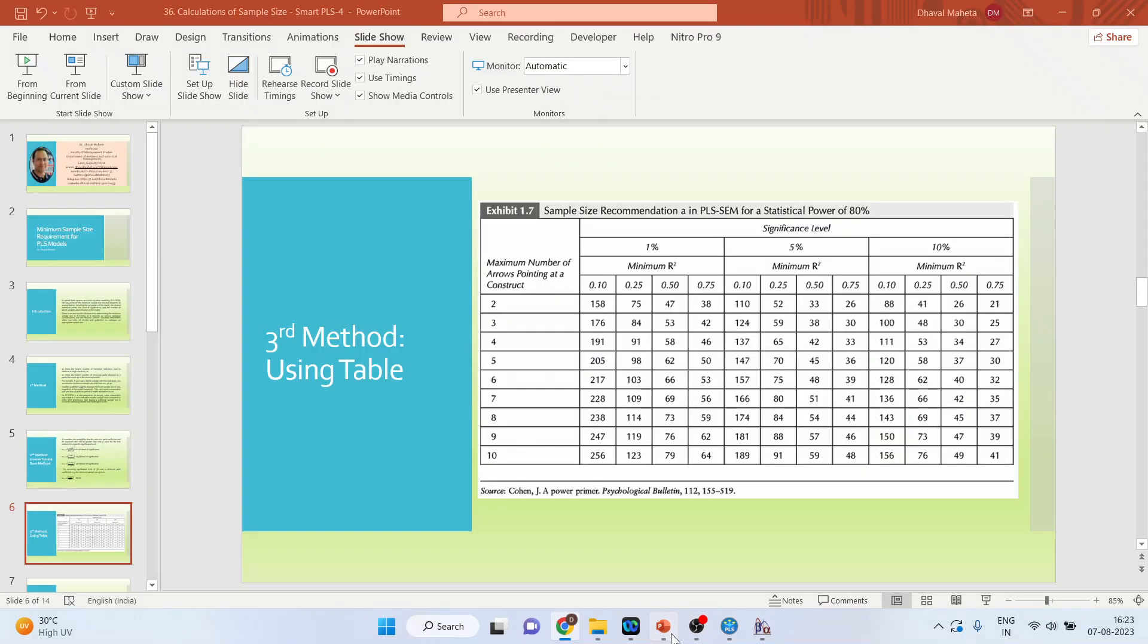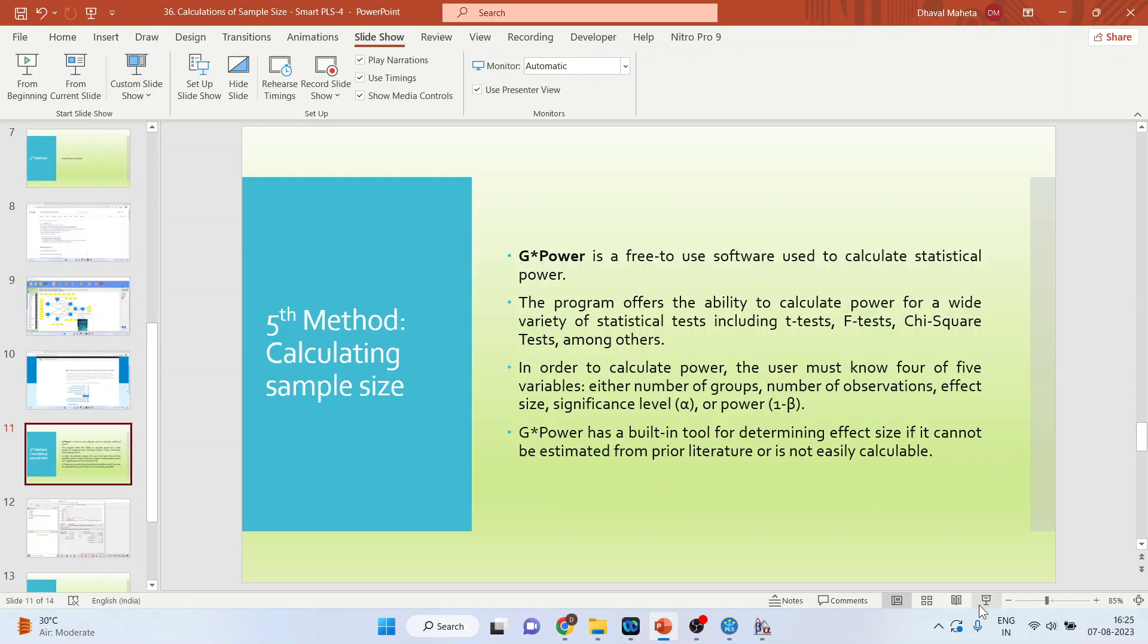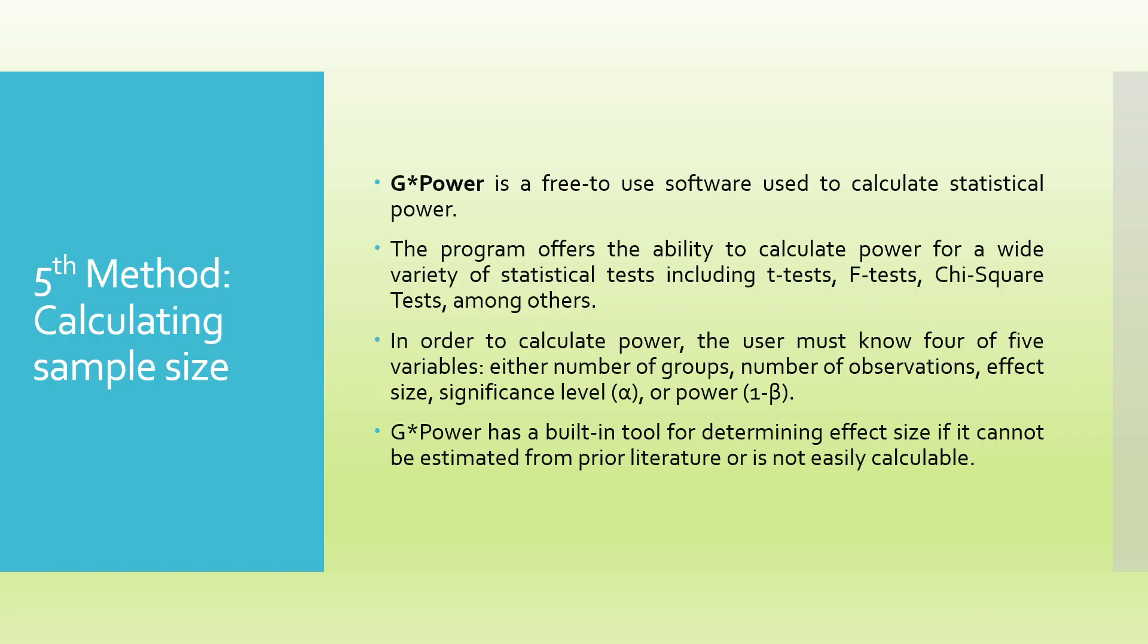So here you can see the minimum sample size for the model structure is 108 and to detect the effect is 1889. So this is the fourth method. The fifth method is using G-Power. The G-Power is a free-to-use software used to calculate statistical power. This program offers the ability to calculate the power for a wide variety of statistical tests including the t-test, F-test, chi-square test among others. In order to calculate power, the user must know four of five variables: either the number of groups, number of observations, effect size, significance level, or the power 1-beta.